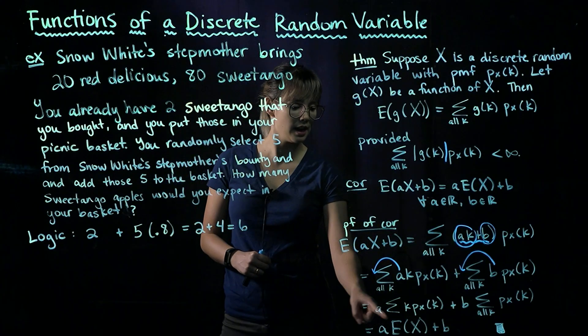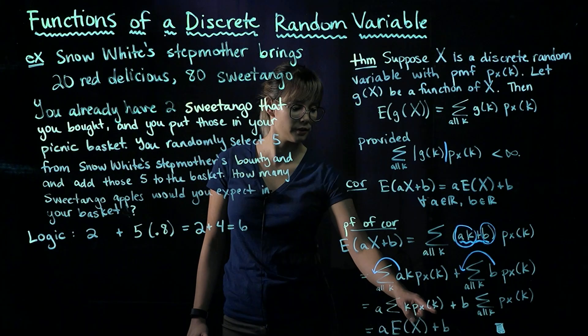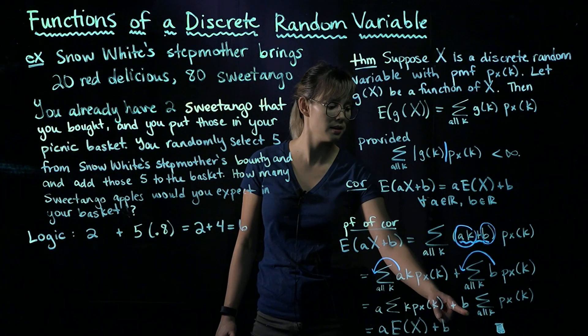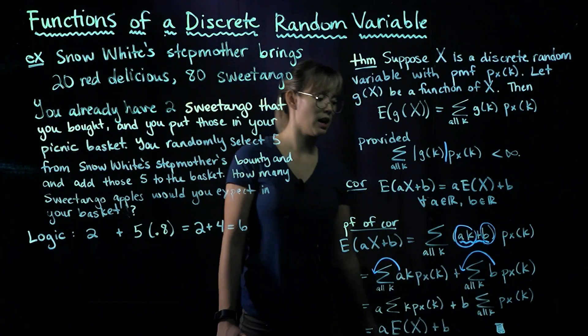And so now we have a times the sum over all k of k times p_X(k), plus b, and then we have a sum over all the values of k, and we have our PMF.